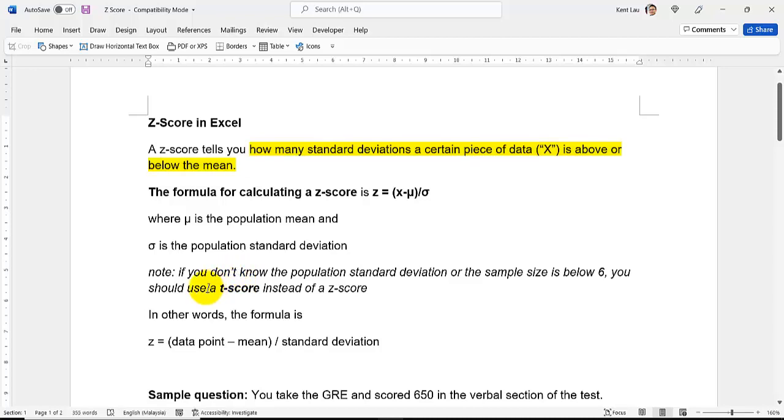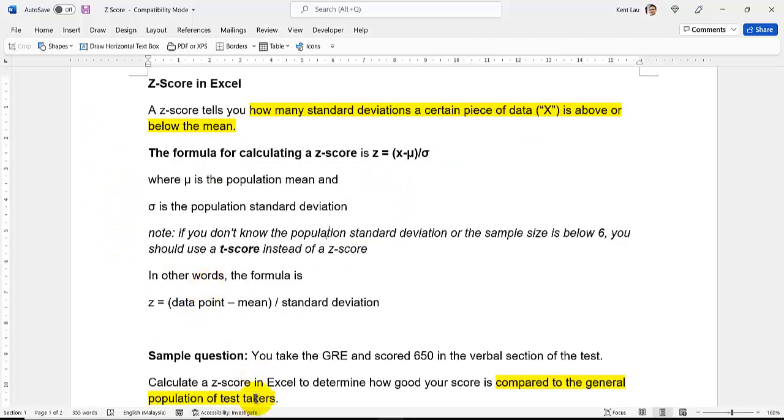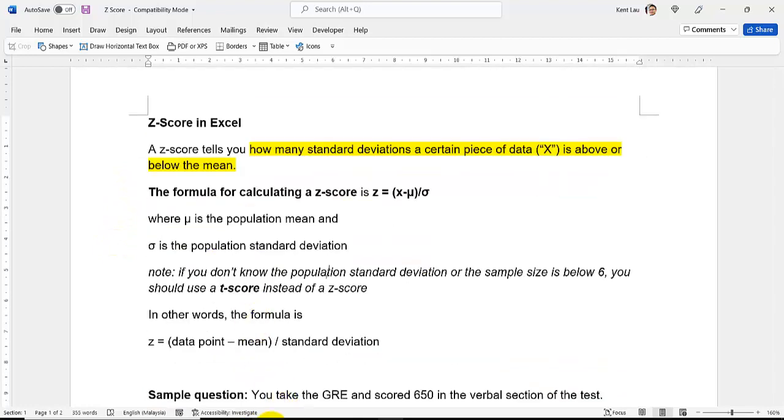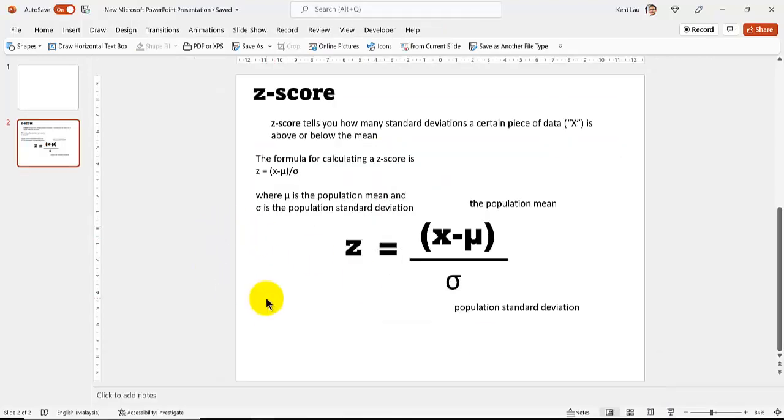Once you understand standard deviation, then you understand z-score. What is z-score? It's how many standard deviations a certain piece of data is from the mean. The goal of this video is not to teach you z-score or standard deviation—that's another video. My goal here is to show you that I know what z-score is and to share with you to watch that Google video on how to learn. You can make formulas easier by putting them into visual format—look at that, it's easier, right?